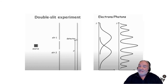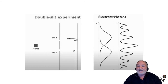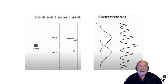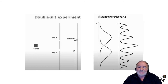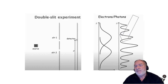The interference pattern is what we would expect to come from a wave, so that's why when the experiment was originally done, it was assumed light was a wave. But now we know it's a particle as well. So why does that interference pattern on the right come up?